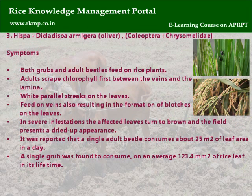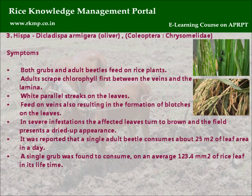Hispa: Dicladispa armigera Olivier, Order Coleoptera, Family Chrysomelidae. Symptoms: Both grubs and adult beetles feed on rice plants. Adults scrape chlorophyll between the veins and the lamina, producing white parallel streaks on leaves, and also feed on veins, resulting in blotches. In severe infestations, affected leaves turn brown and the field presents a dried-up appearance. A single adult beetle consumes about 25 square centimetres of leaf area per day, and a single grub consumes on average 123.4 square millimetres of rice leaf in its lifetime.